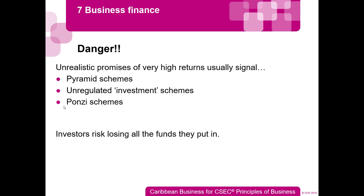In a Ponzi scheme, someone takes people's money claiming to invest it, but they're actually spending it on themselves while promising high returns. With pyramid schemes, as the name suggests, one person at the top makes all the money. You pay into a pool, and if you bring in 10 people they pay you, and so on — but the only person really making money is at the very top. Everybody else gets nothing, so don't get caught up in that.